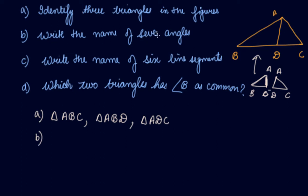Write the name of the seven angles in this. The seven angles are: from the bigger triangle, let's look at the angles. Angle ABC, then angle BAC — the full angle BAC — and then angle ACB. These are three angles from the full triangle ABC.